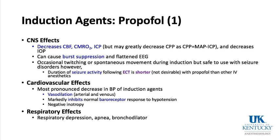Propofol: it decreases cerebral oxygen use and therefore blood flow and intracranial pressure. One concern is that it markedly drops MAP — cerebral perfusion pressure is MAP minus ICP. If MAP decreases a lot and ICP decreases only a little, cerebral perfusion pressure is negatively impacted. Propofol also decreases intraocular pressure. Enough propofol causes EEG flattening or burst suppression — on a BIS monitor, a burst suppression ratio of 50% means the EEG is flat 50% of the time.